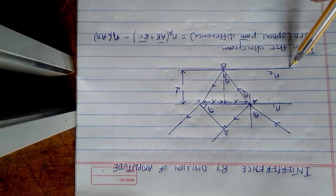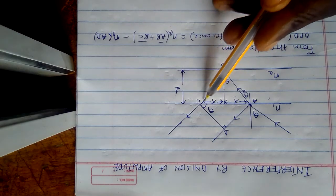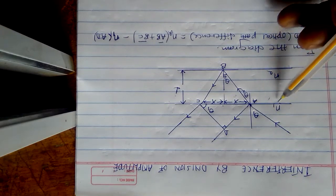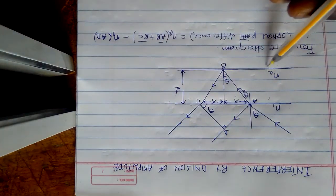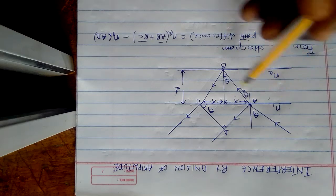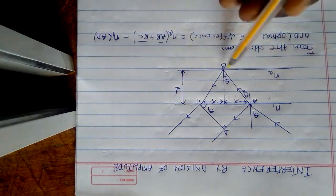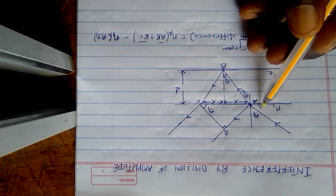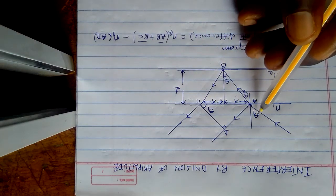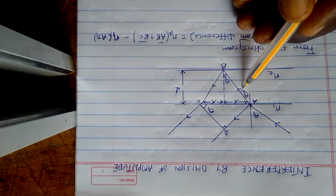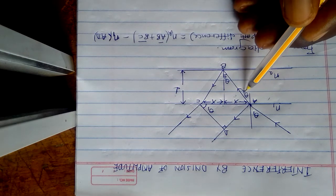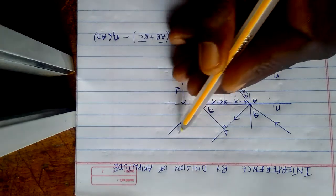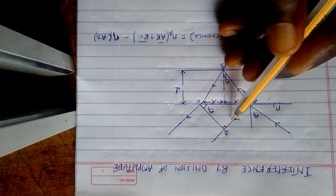We have index N1, which is the index of the air around, and N2 is the index of the thin film. This is the distance d between the two layers of the thin film. We have distance x, the angle of incidence theta1, and the angle of transmission theta2. These two rays are parallel, which is why we have a 90-degree angle here.